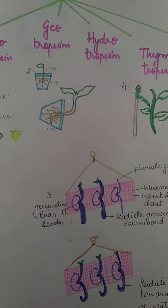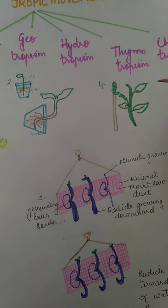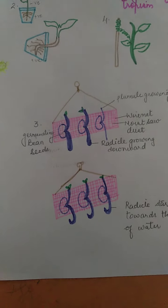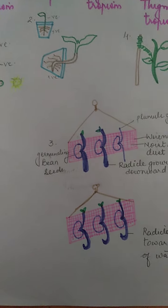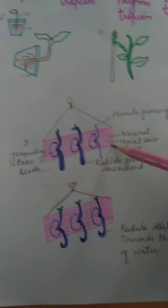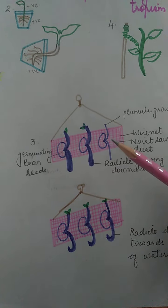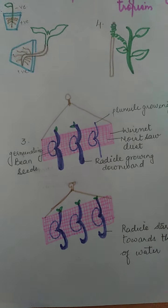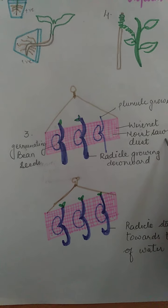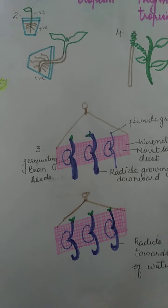The third is hydrotropism. 'Hydro' is related to water. Hydrotropism is the growth movement of a plant in response to water or moisture. For this, we can look at an experiment: a wire net is tied to a hook, and on that wire net a one to two inch thick layer of moist sawdust is applied. Bean seeds are placed on it to germinate.